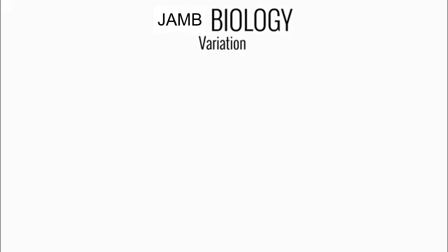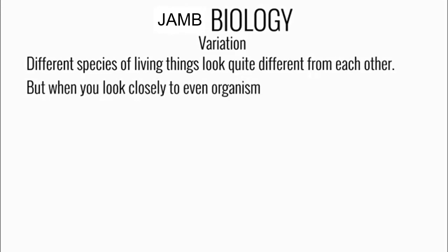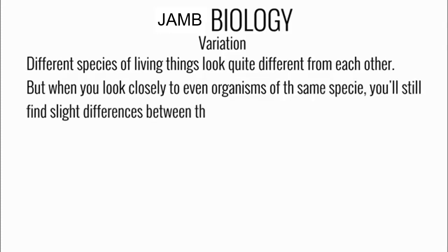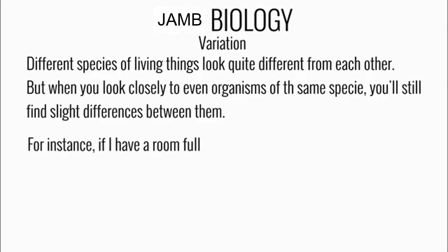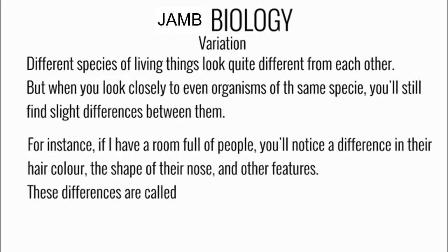Different species of living things look quite different from each other, but when you look closely at even organisms of the same species you will also find slight differences between them. For instance, if you have a room full of people you will notice differences in their hair color, the shape of their nose, and other features. These differences are called variation within a species.